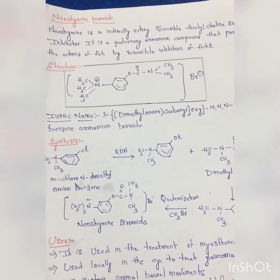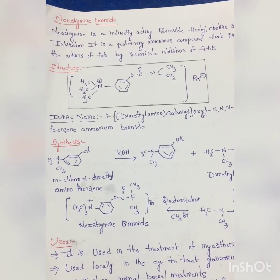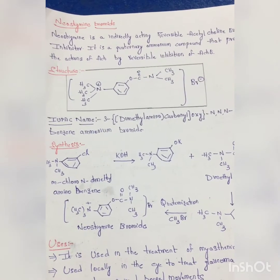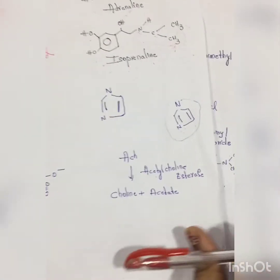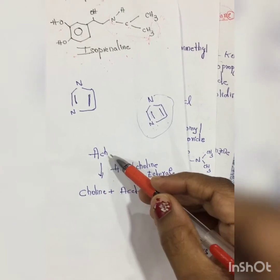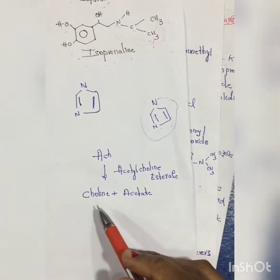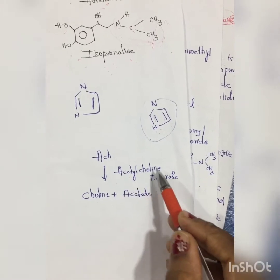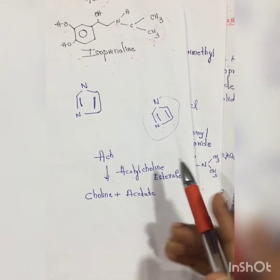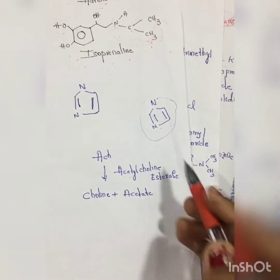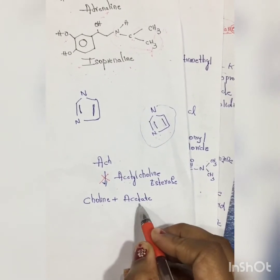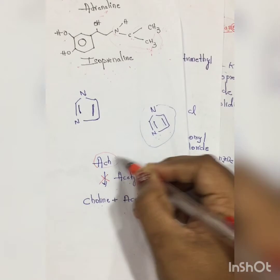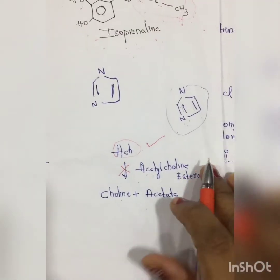The next drug is Neostigmine Bromide. Neostigmine is an indirectly acting reversible acetylcholinesterase inhibitor. Acetylcholinesterase is an enzyme - as you all know, acetylcholine is a neurotransmitter in the parasympathetic nervous system. This acetylcholine will be metabolized into choline and acetate with the help of the enzyme acetylcholinesterase. So Neostigmine Bromide is an acetylcholinesterase inhibitor. It will inhibit the metabolism of acetylcholine into choline and acetate, and thereby acetylcholine will not be metabolized and its actions can be prolonged.